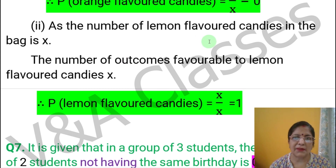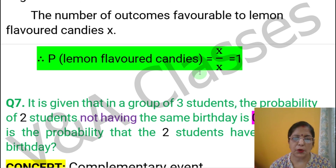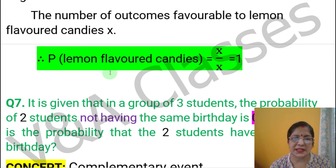The number of outcomes favorable to lemon flavor candies equals x, and the total number of outcomes is also x. So the probability equals x divided by x, which equals 1. This means the probability for the second part of the question is 1.